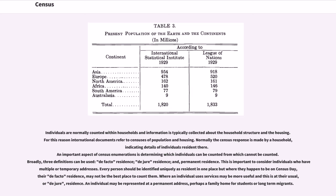Every person should be identified uniquely as resident in one place, but where they happen to be on census day — their de facto residence — may not be the best place to count them. Where an individual uses services may be more useful, and this is at their usual, or de jure, residence. An individual may be represented at a permanent address, perhaps a family home for students or long-term migrants.